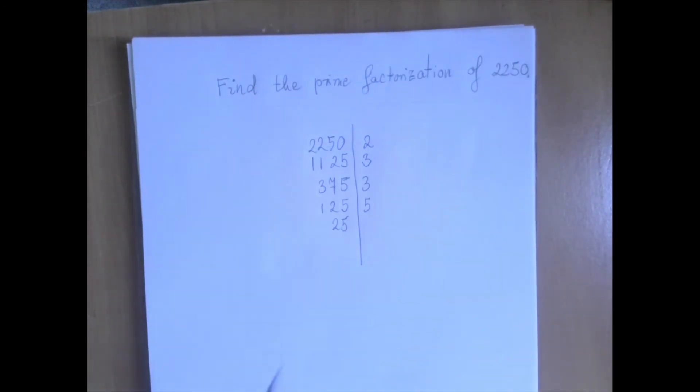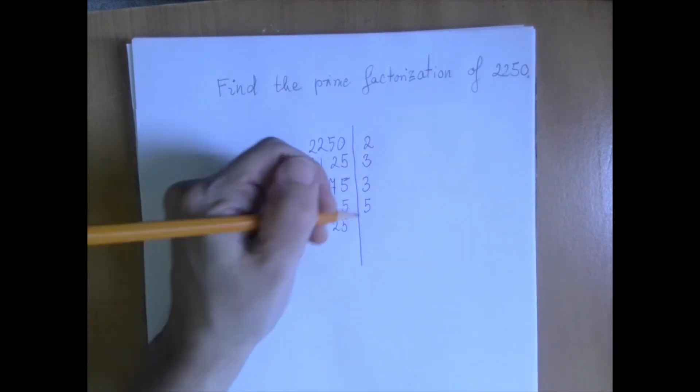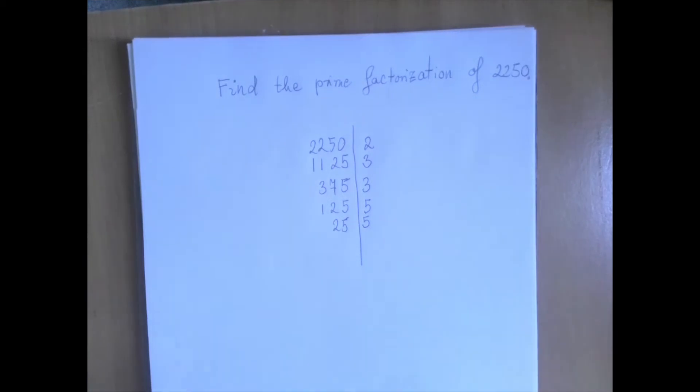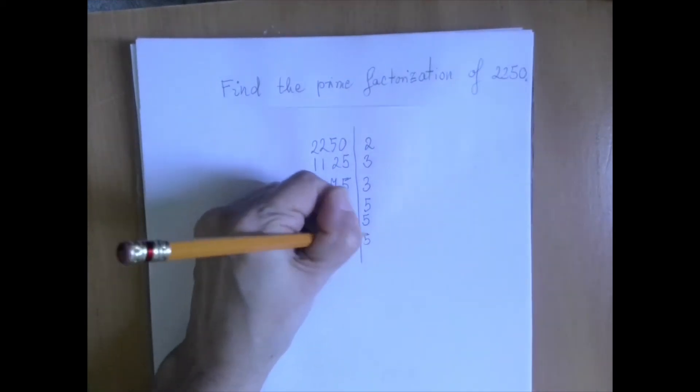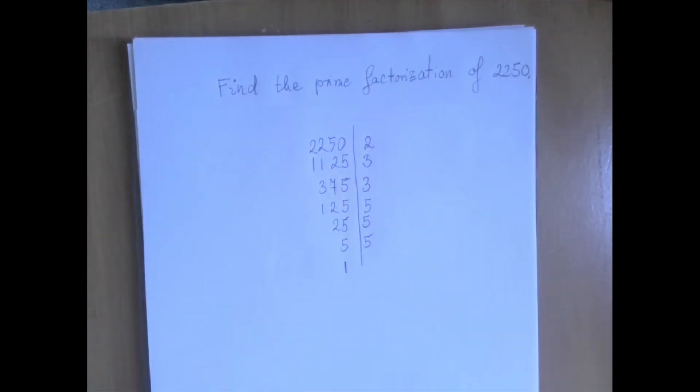But just to be systematic, this is still divisible by 5. So we write it down, and then we divide. And then one more 5. And then once we reach 1, that means that this here is the prime factorization.